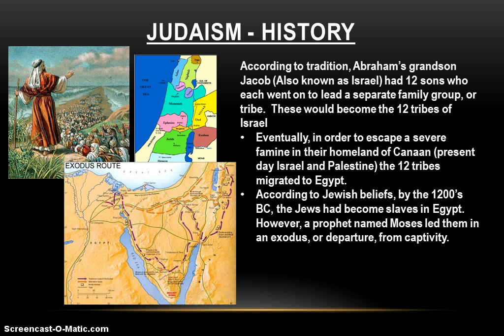As time goes on, according to Jewish tradition, a severe famine gripped the region — perhaps drought, perhaps a plague of locusts. The people left their homeland in Canaan and moved to Egypt, a nearby place with very fertile lands. According to Jewish beliefs, by the 1200s BC, the Jews who had moved to Egypt had somehow become slaves. However, a prophet named Moses goes head-to-head with the Egyptian pharaoh, secures the release and freedom of the Jewish people, and leads them on an exodus — a departure from captivity.